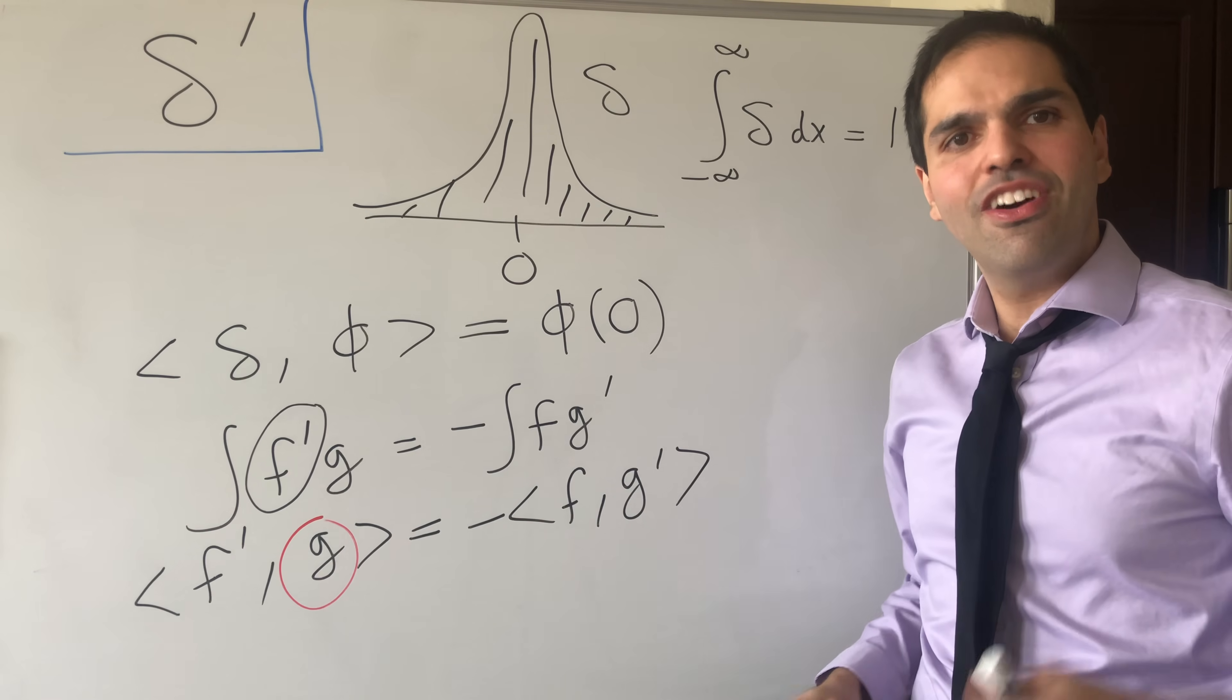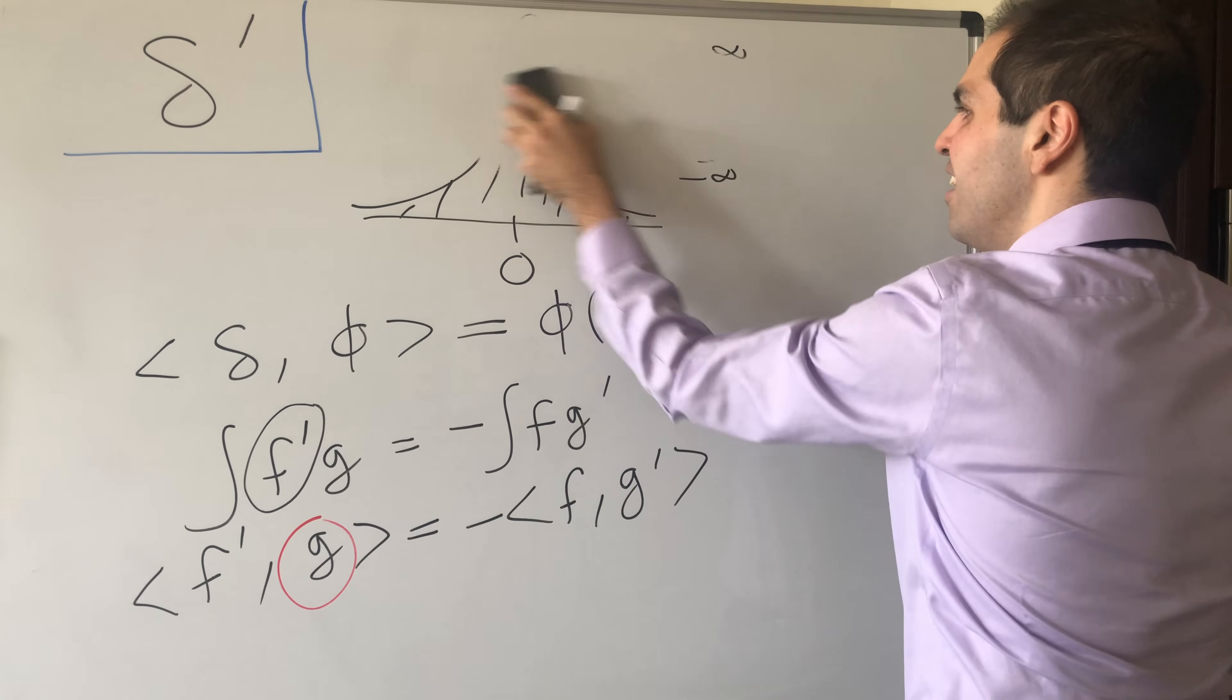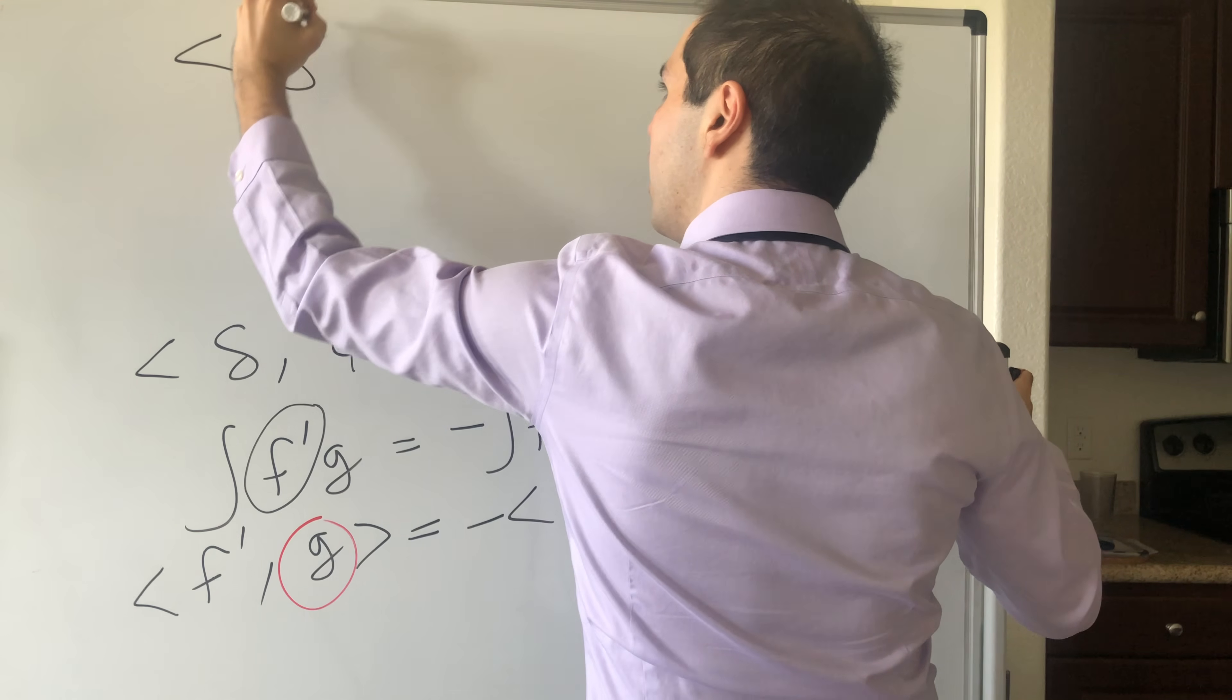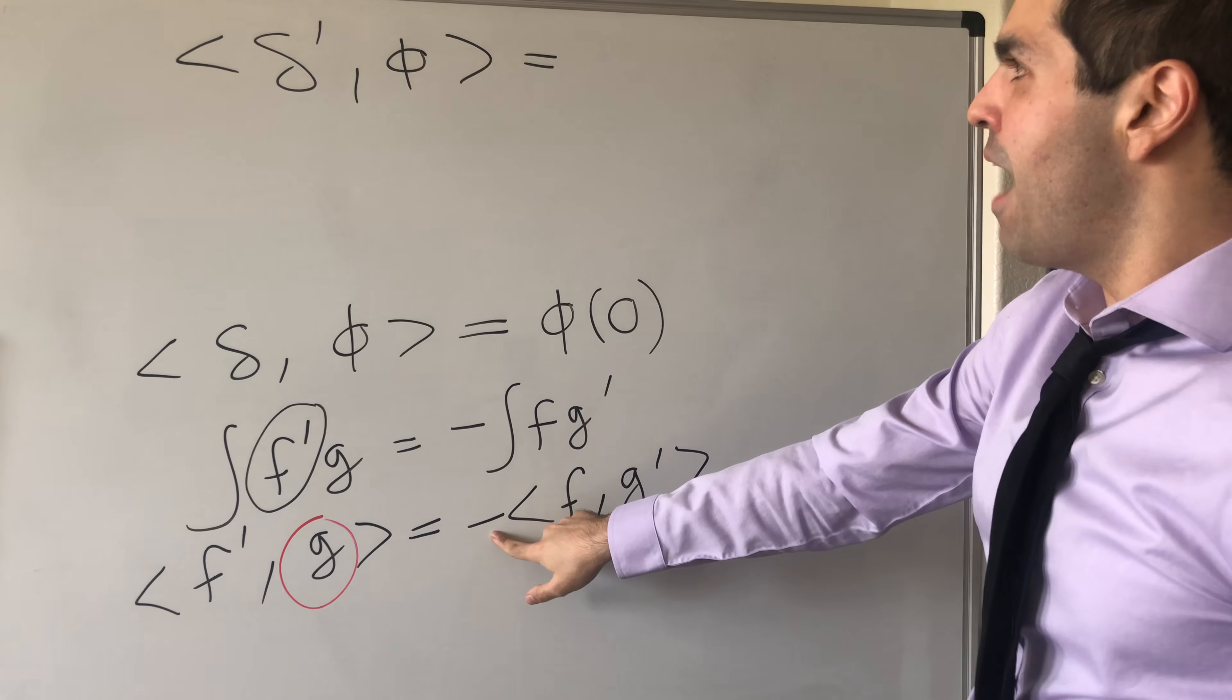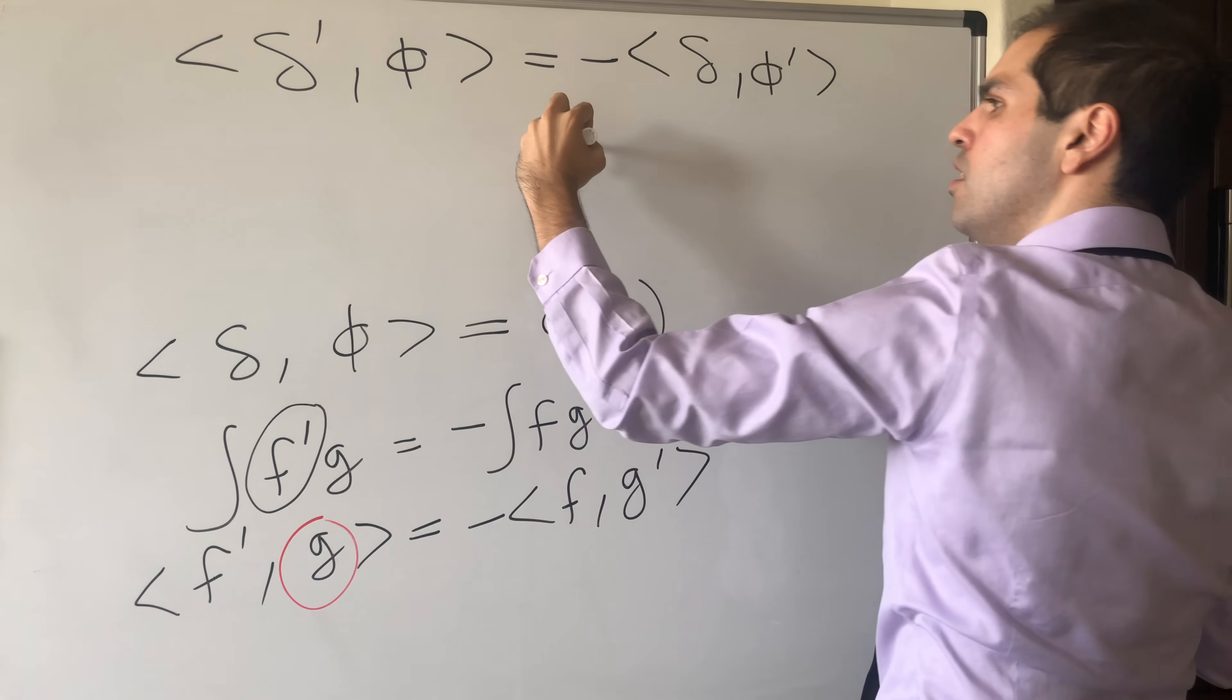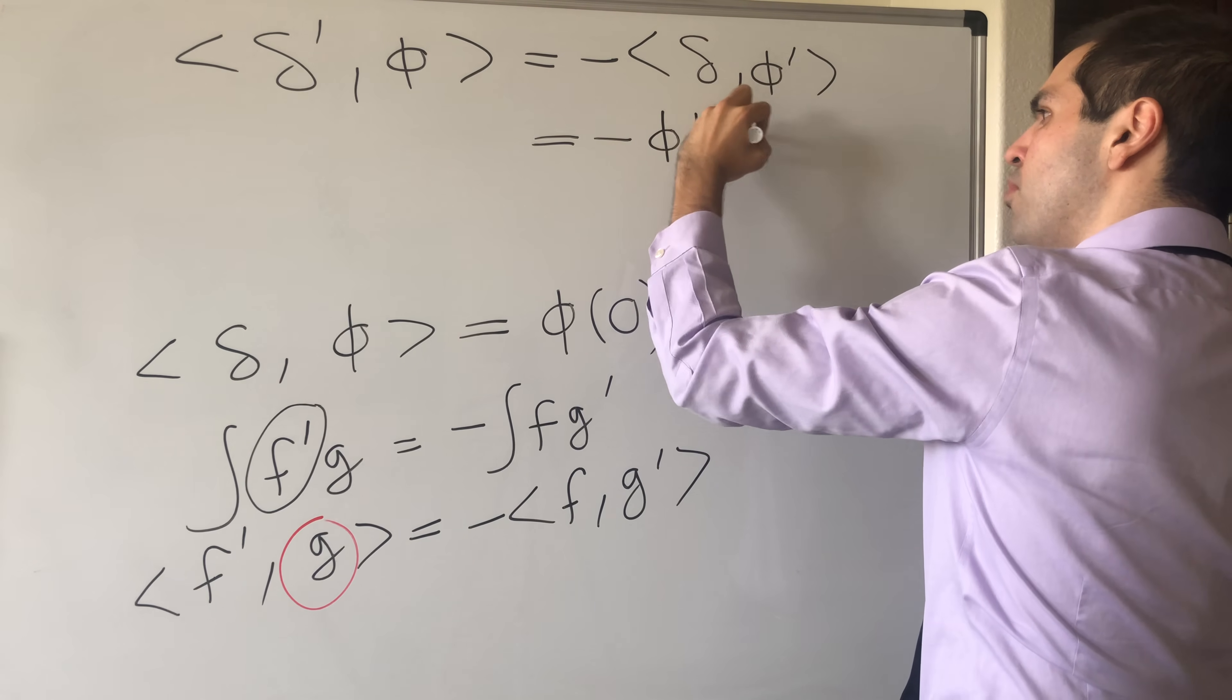So this is how you can define the derivative of a distribution. And let's apply that by finding the derivative of the Dirac delta. And you get something which, in my opinion, is pretty surprising. So what is delta prime applied to phi? Well, it's minus, and you transfer the derivatives, so minus delta applied to phi prime, which gives you—remember what the Dirac delta does, it evaluates functions at zero—so it gives minus phi prime of zero.